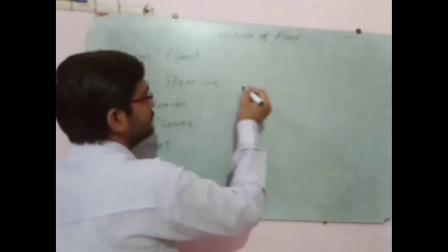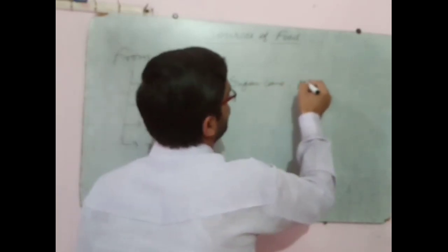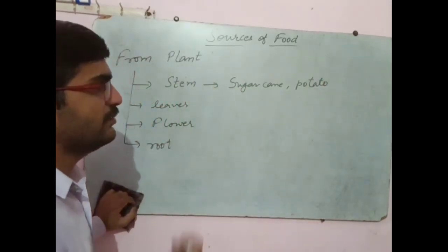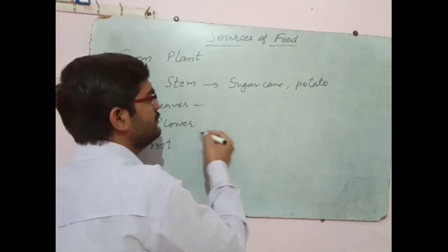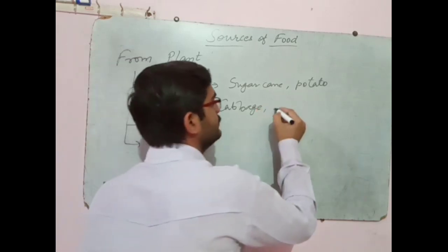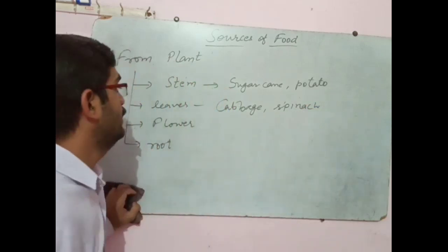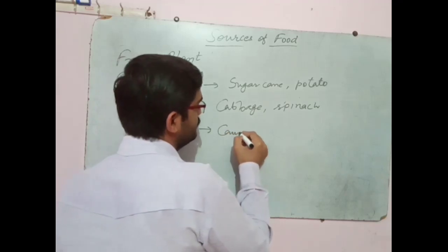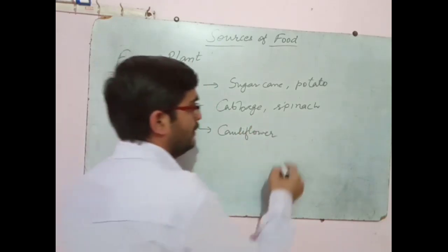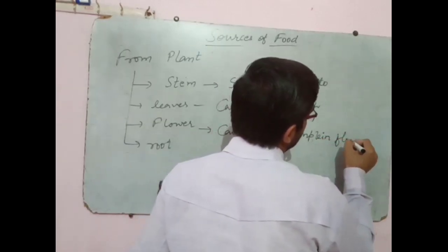From stem, like sugarcane — these are the foods which we get from stem. Many more items are there. And from leaves: cabbage, spinach, etc. And from flowers: cauliflower, pumpkin flower, etc.